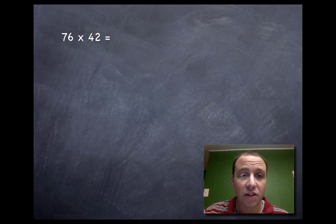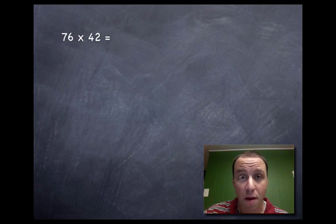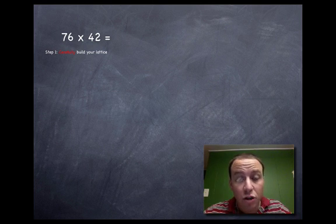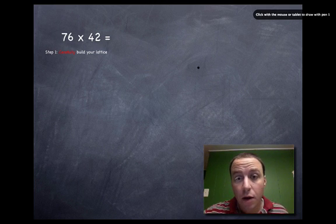There's a couple of steps that you have to take when you first sit down to do the problem. So let's take a look at a problem. We've got 76 times 42. Three steps that you have to remember: first, carefully build your lattice.